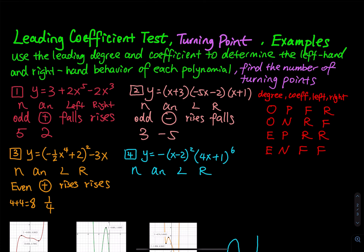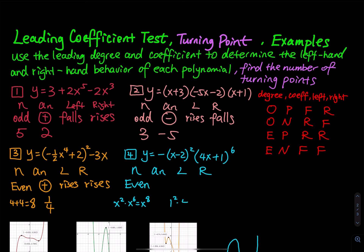For the last one, the leading degree is not 1. You have to square the first factor — that's degree 2 — and multiply by the 6th power term. So x squared times x to the 6th gives x to the 8th, meaning the leading degree is even. The leading coefficient: 1 squared times 4 to the 6th — I only care if it's positive or negative. There is a minus sign in front, so it is negative. Even and negative means falls to the left and falls to the right.